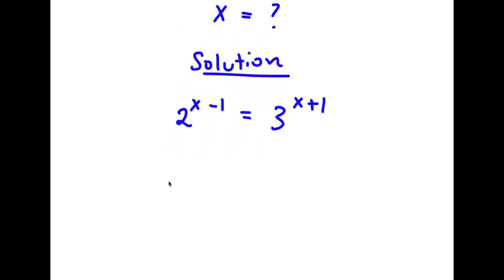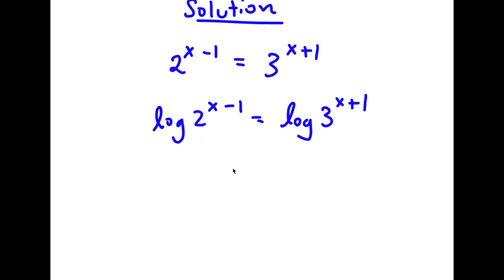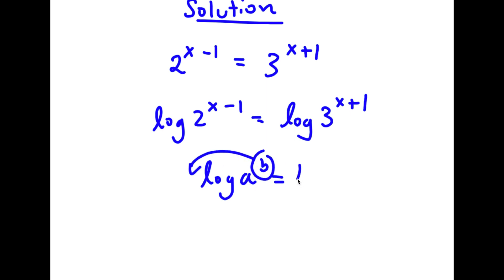Now, I'm actually going to take the log on both sides. So now I have log 2 to the power of x minus 1 is equal to log 3 to the power of x plus 1. And if I have something in the form log a to the power of b, I can move this exponent b to the front. So this thing is called b times log a.